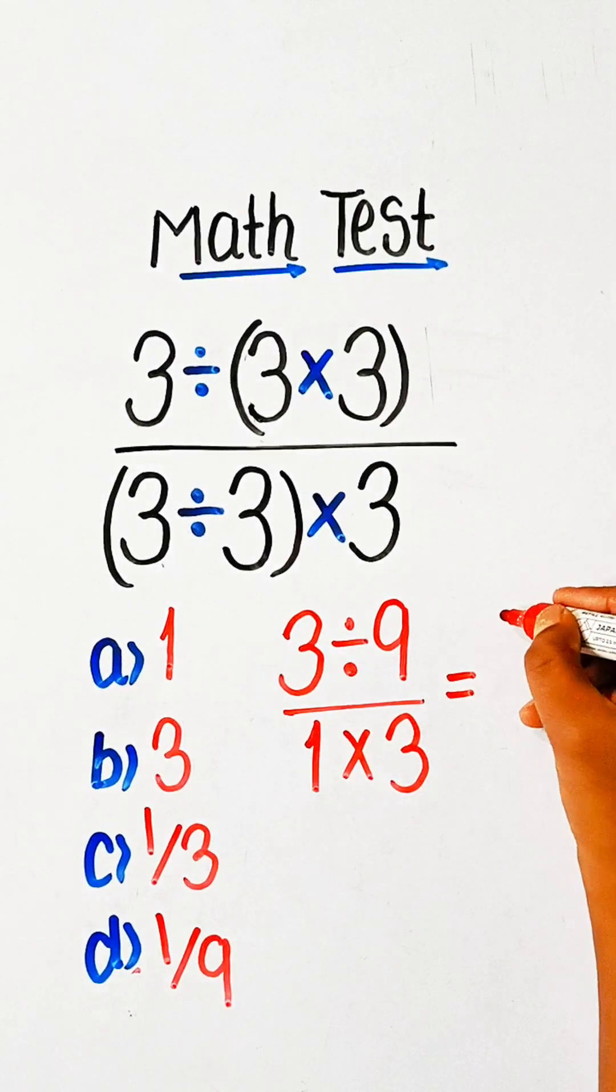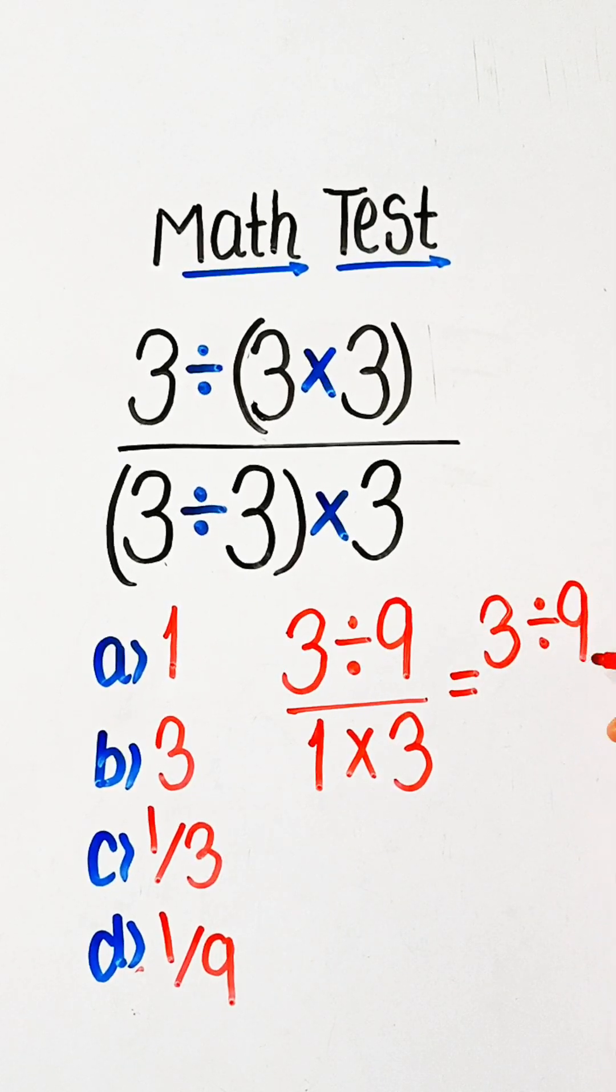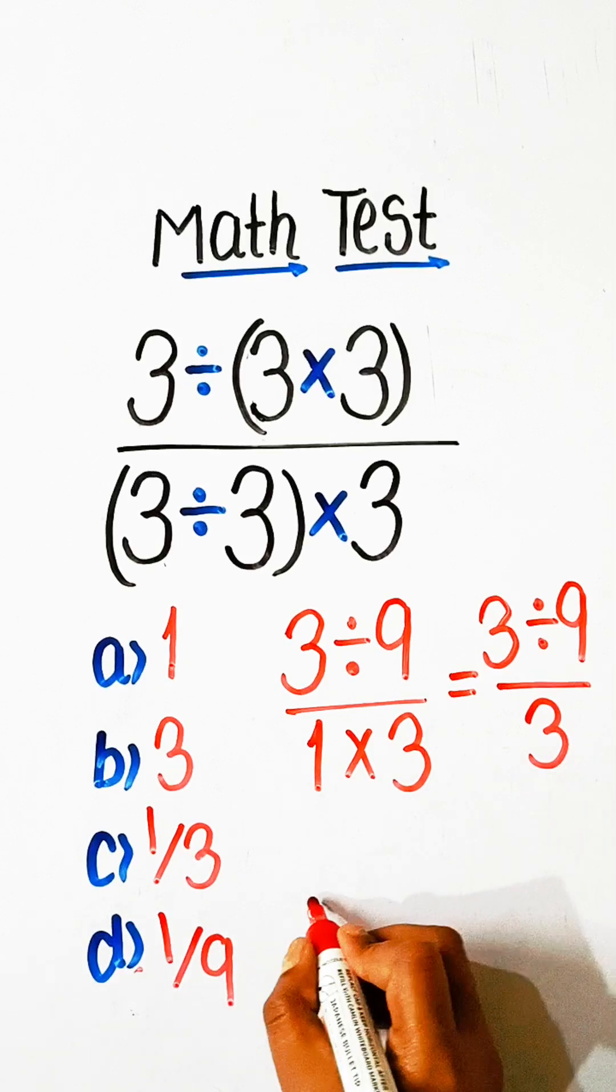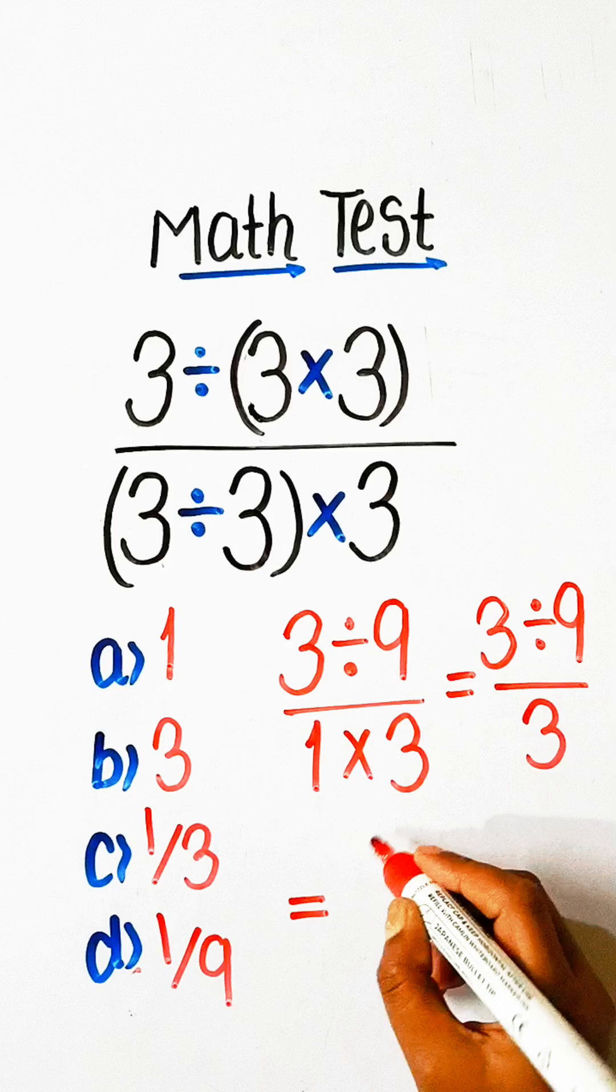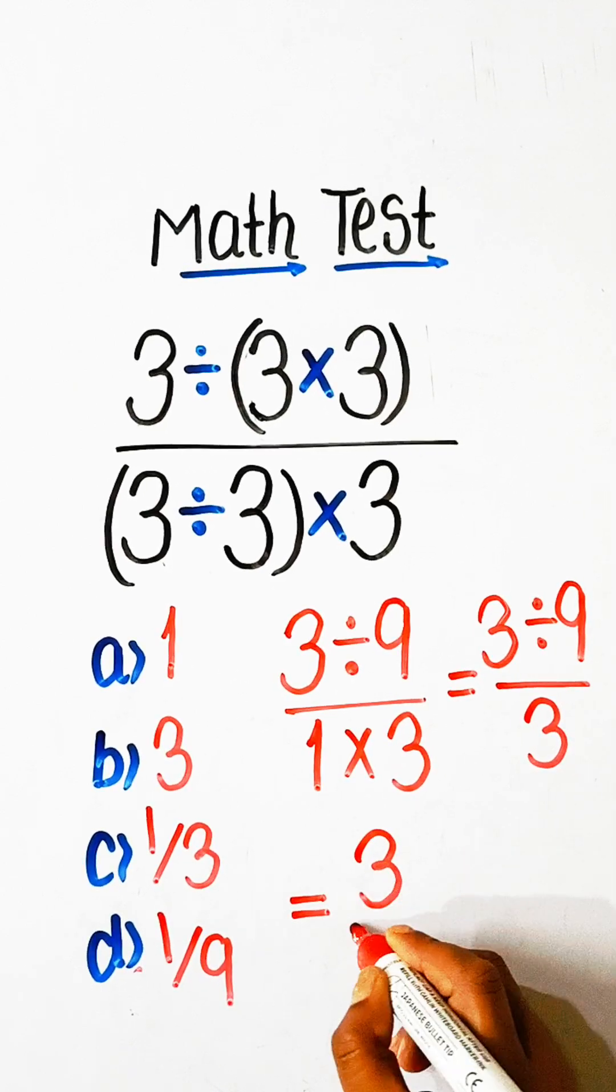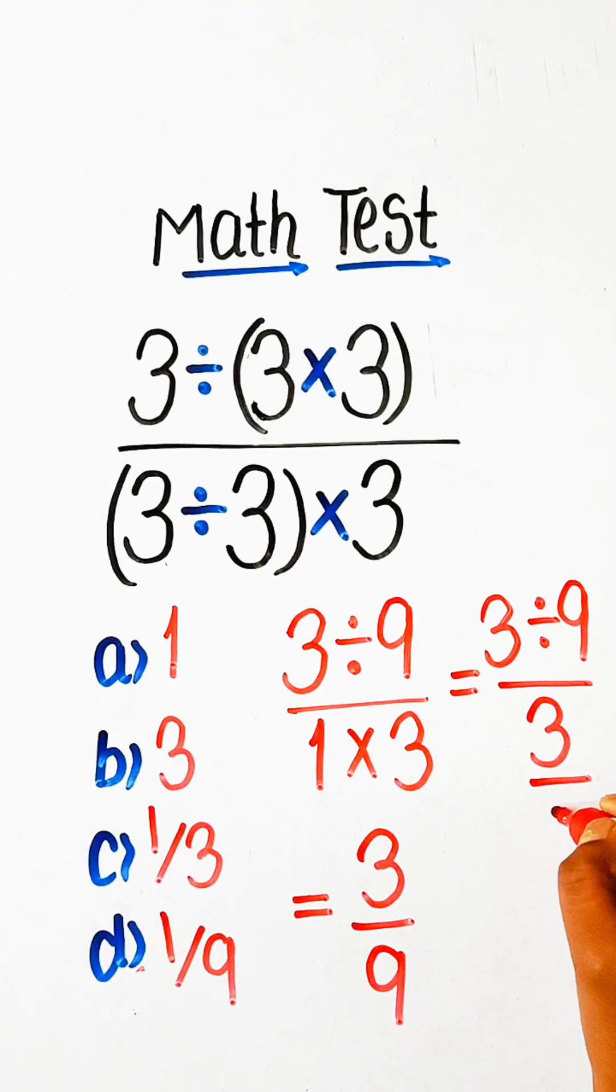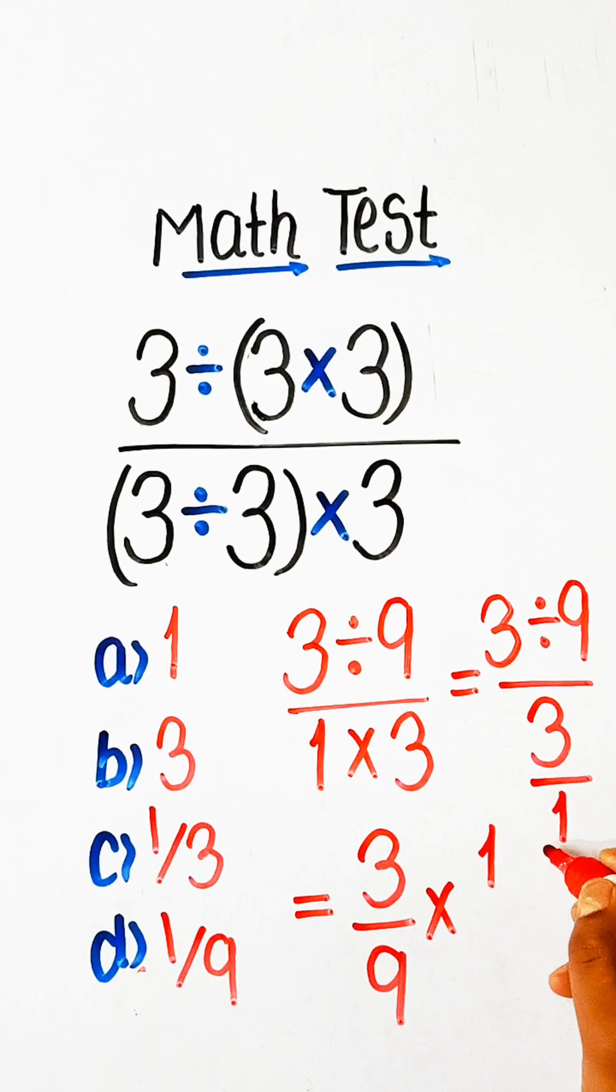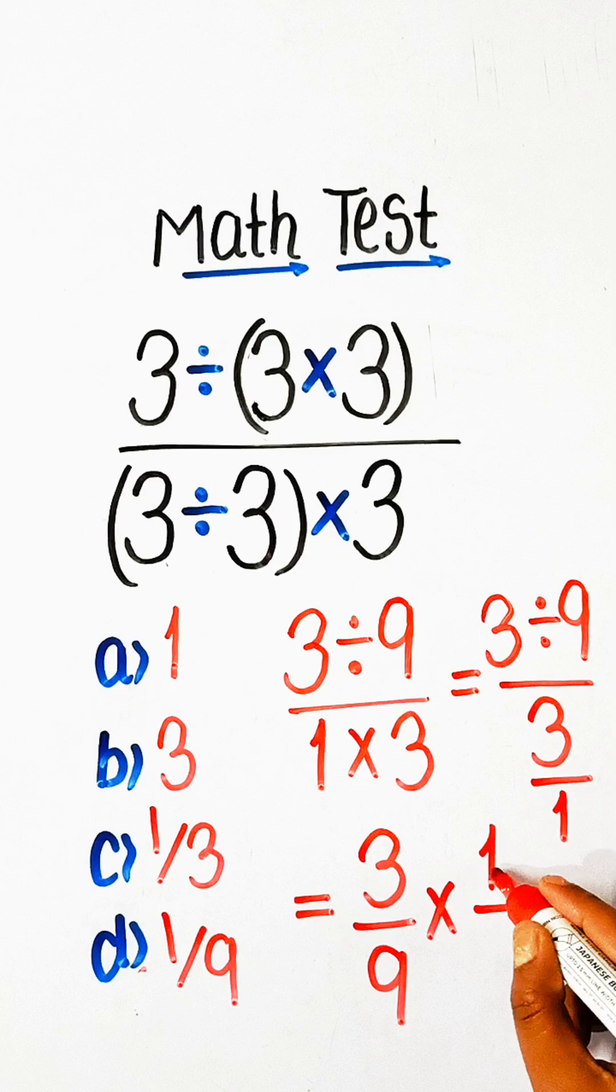So we can write 3 divided by 9 upon 3, and we can write this 3 upon 9 like this, and 3 upon 1 here. So we can write here 3 over 1, it goes upside down, so we can write 1 upon 3.